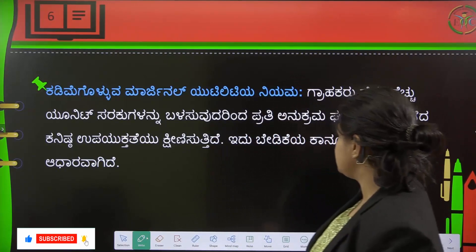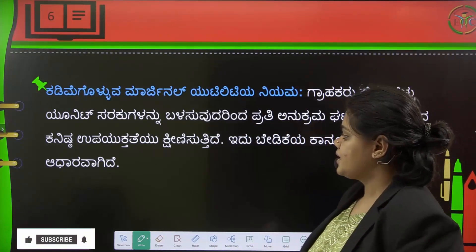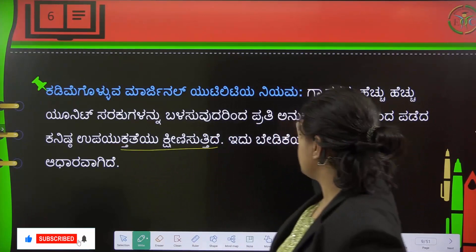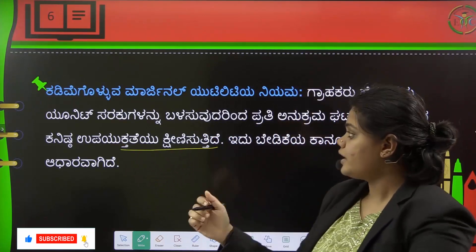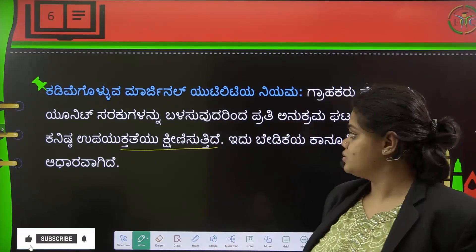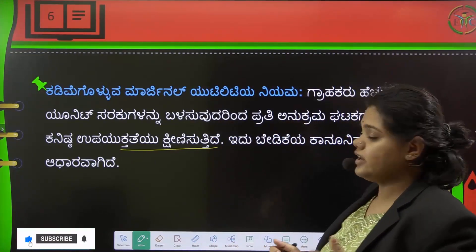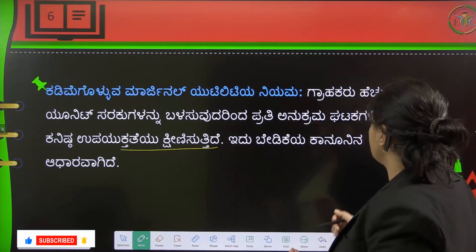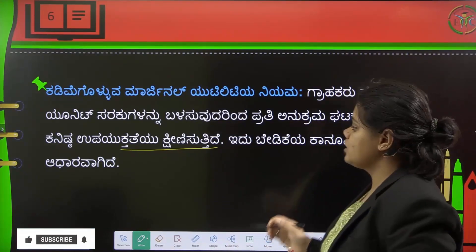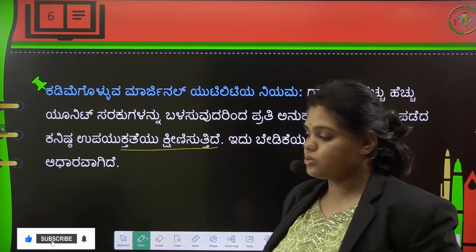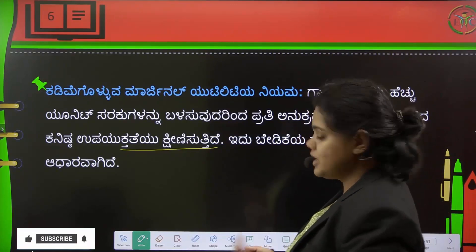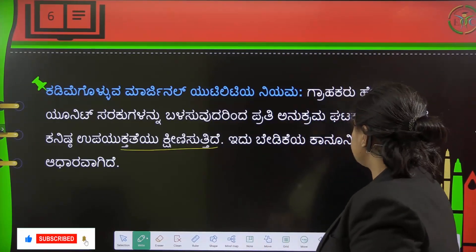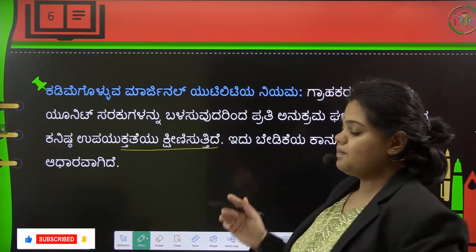Looking at the numerical values: minus 2, yes minus 1, then minus 2, minus 3, and 1 minus 2. These illustrate the progression of marginal utility moving into negative territory.